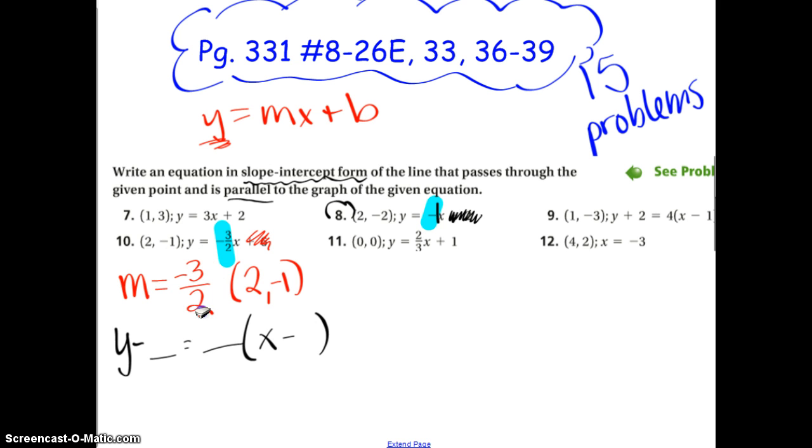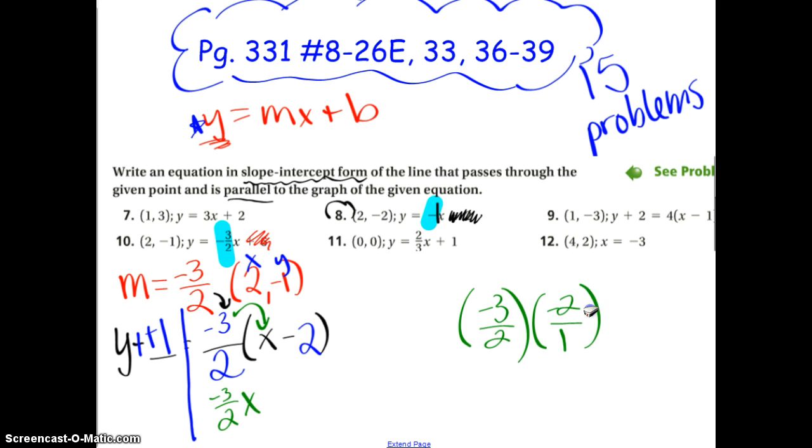Alright, now I start plugging stuff in. My slope is negative 3 halves. That goes right here. So negative 3 halves. My x goes with my x. My y goes with my y. And it's minus 1, which really makes it plus. Okay, if you just make it into a plus right away, that's totally cool. So now my ultimate goal is to get to slope-intercept form, which looks like this. How do I do that? I distribute first. Negative 3 halves times x is just negative 3 halves x. Negative 3 halves times negative 2. Negative 3 halves times negative 2 could be 2 over 1. It gives me positive 6 over 2. Can't leave it that way. I could have just simplified out right away. It gives me 3 over 1. So positive 3. And then I've got y plus 1 equals this stuff.